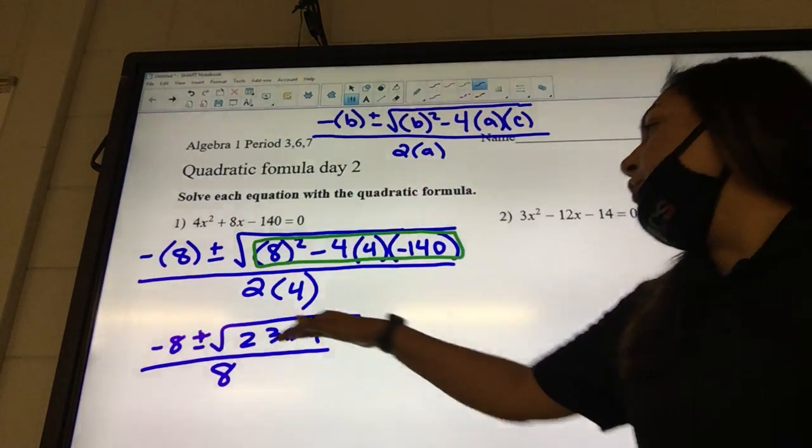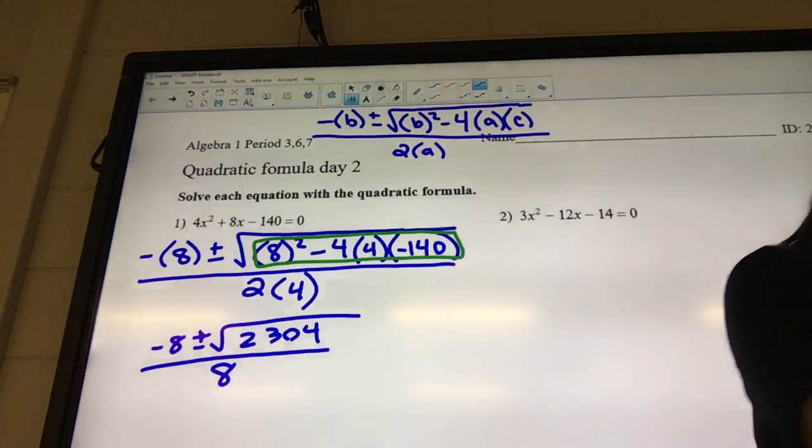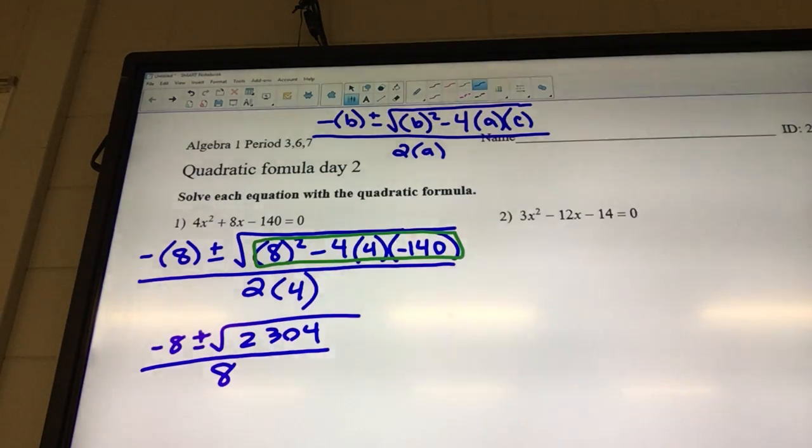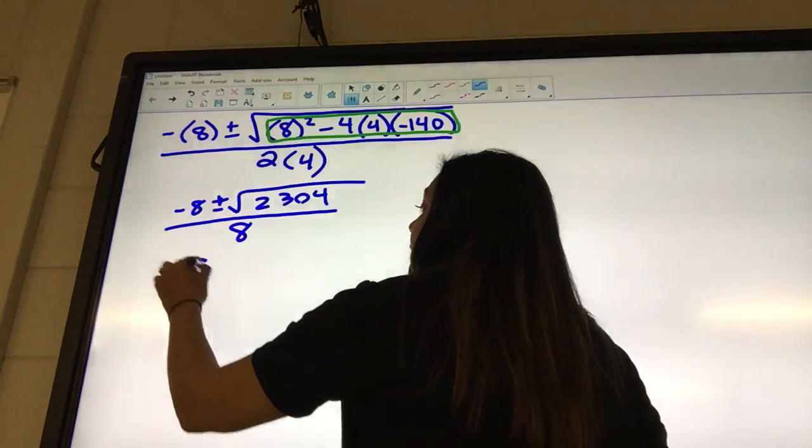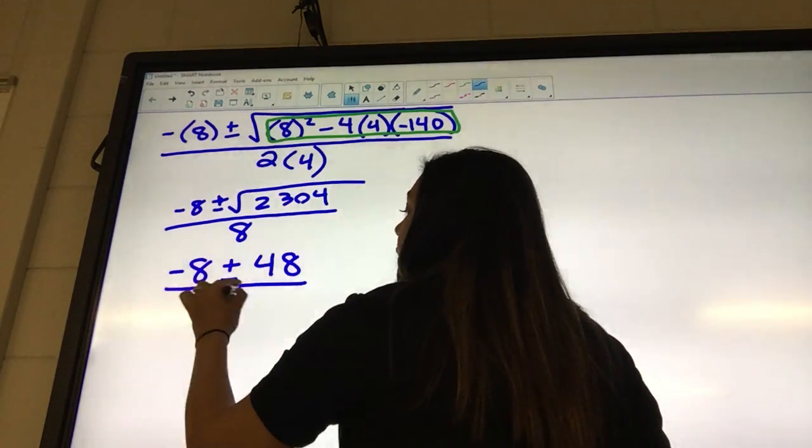Okay, now you need to check that 2,304 with the square root. Does it simplify or not? 48. Somebody else agree? Yeah. Okay, so we're going to have negative 8 plus or minus 48 over 8.